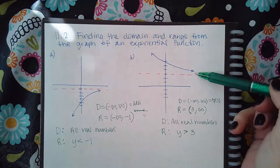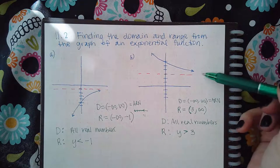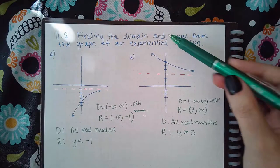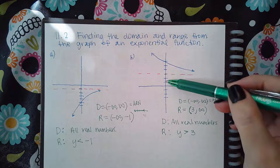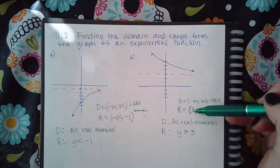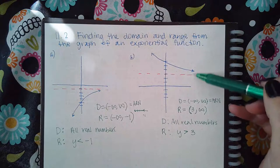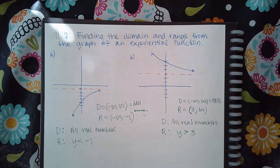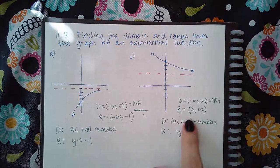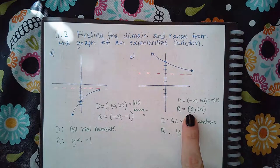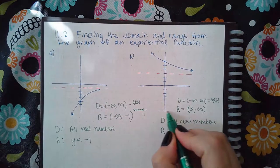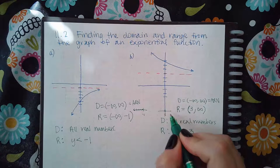And then the range goes from this spot really close to that red line and then up forever. So from that, the asymptote is at three, so from three to infinity. But since it'll never touch that asymptote it's not going to be included, which means there will be a parenthesis there.